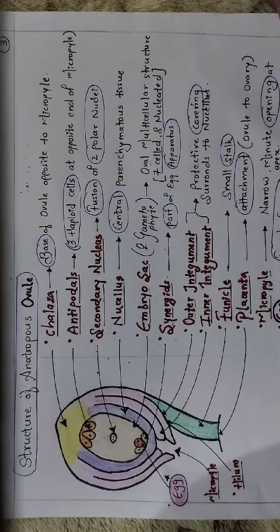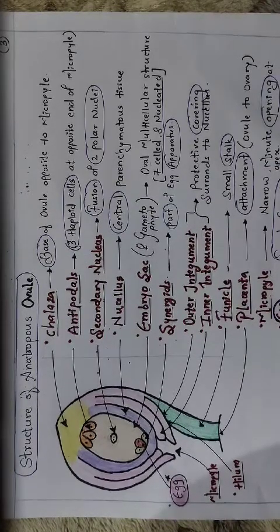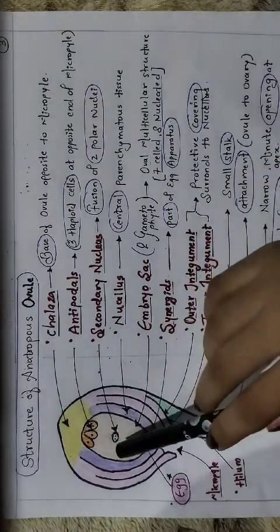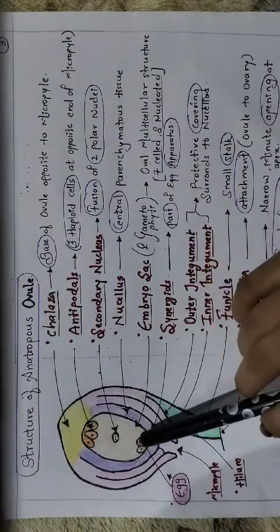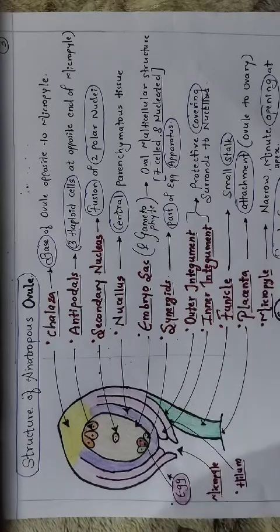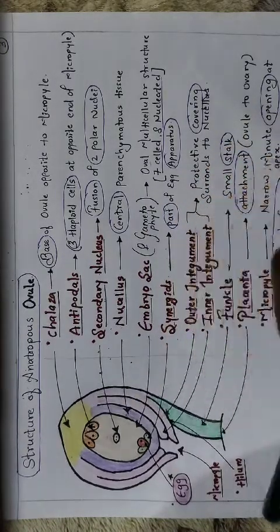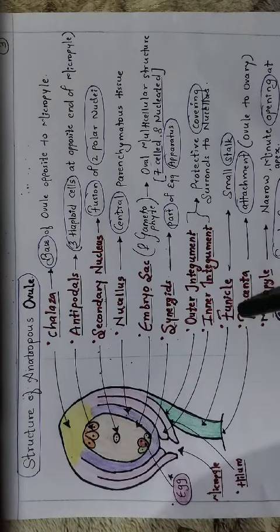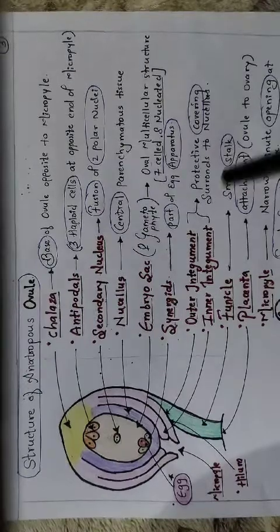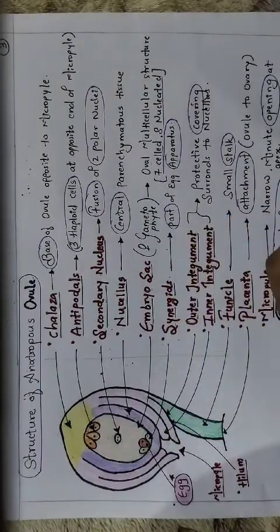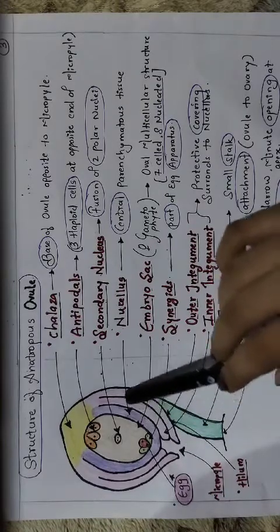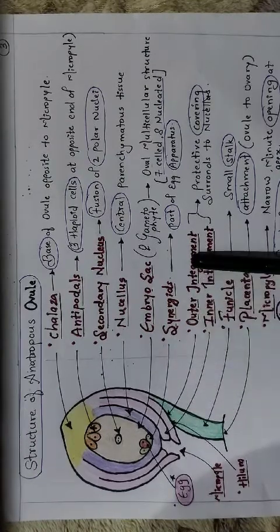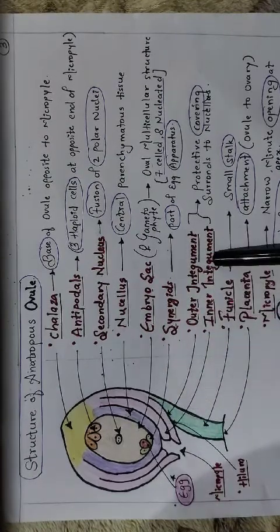Here you can see the structure of an ovule, which is present inside the ovary. The ovary has the main part called the embryo sac, in which there is a female gamete called the egg. The main parts we will focus on are: the funicle, which is a small stalk through which the body of the ovule gets attached, and the integument — the pinkish two-layered structure. The outer layer is called the outer integument and the inner layer is the inner integument.